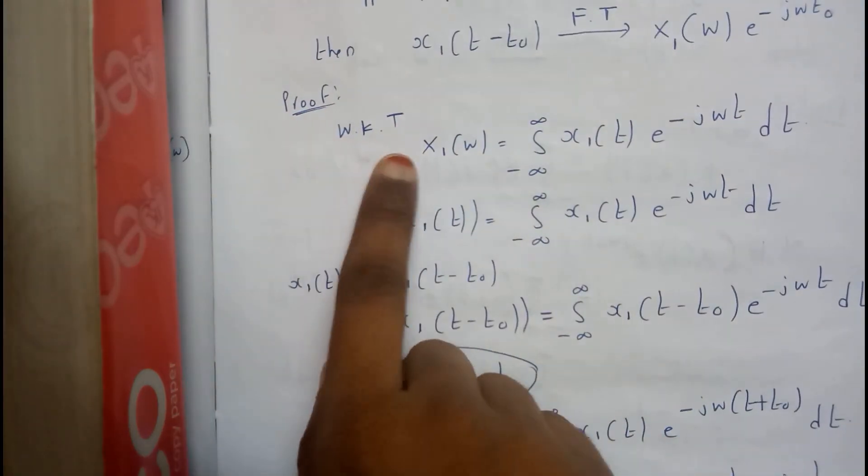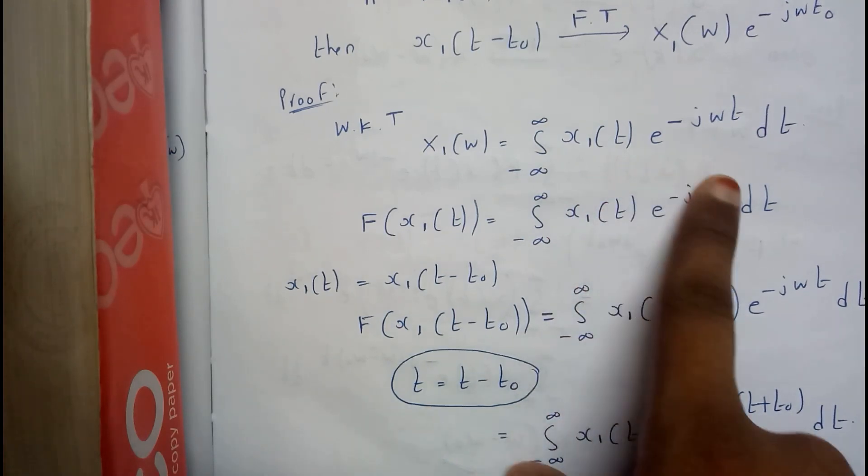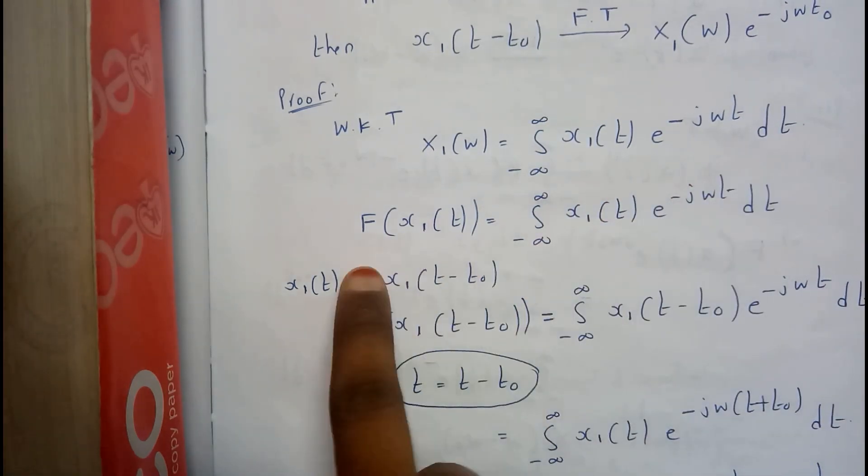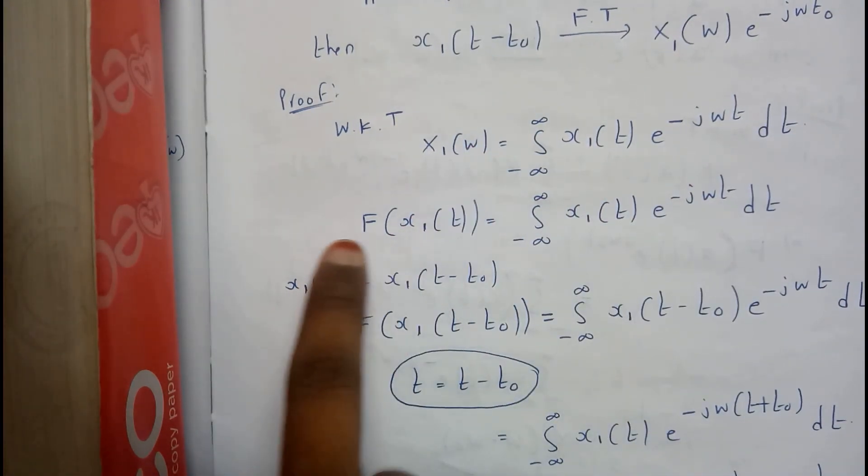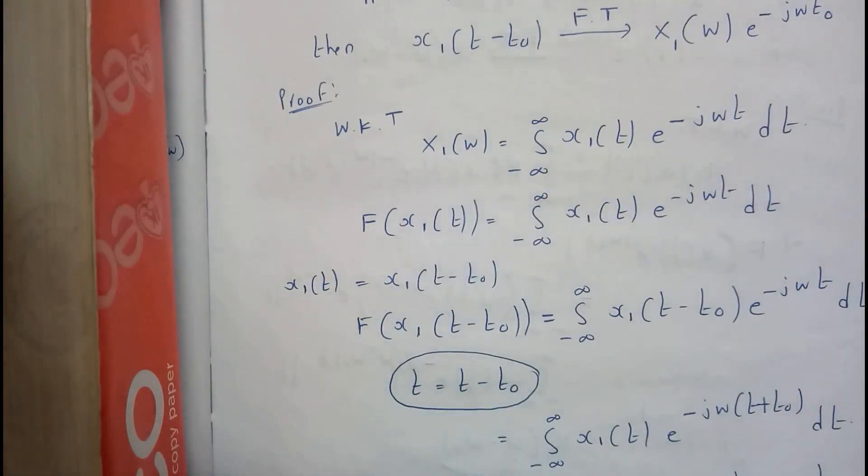So we all know that x₁(ω) equals integral from minus infinity to infinity of x₁(t) e^(-jωt) dt. So whereas Fourier transform of x₁(t) is nothing but this only, guys. I've just written it again.